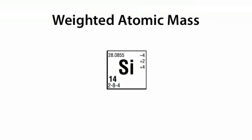Next, we're going to talk about weighted atomic mass. When you look at the periodic table and pull out any block — for example, the silicon block — you see the atomic symbol SI, the atomic number 14, the electron configuration, and the possible oxidation states. But what we're going to focus on is the number 28.0855. This is the atomic mass of silicon. We define atomic mass as the number of protons plus the number of neutrons.